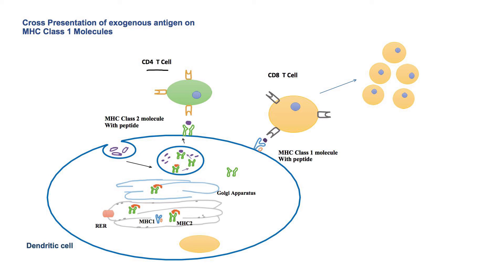However, dendritic cells can also present extracellular peptides on HLA class 1 molecules to CD8 T cells. This process is called cross presentation. While CD8 T cells usually result in lysis of the cell presenting antigens on HLA class 1 molecules, this interaction with dendritic cells results in activation and proliferation of CD8 T cells, which then contribute to the cytotoxic component of the immune response.